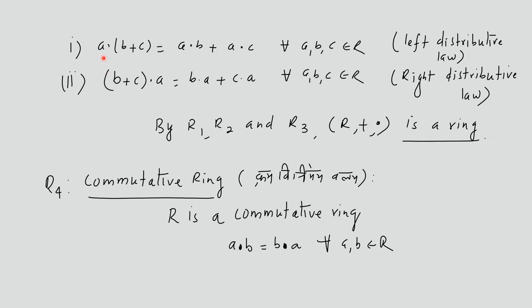The distributive laws: first, a·(b+c) = a·b + a·c for all a, b, c ∈ R. This is called left distributive law. Second, (b+c)·a = b·a + c·a for all a, b, c ∈ R. This is called right distributive law.